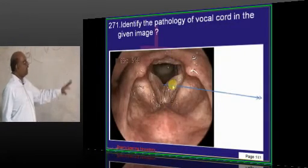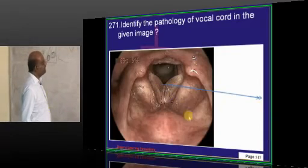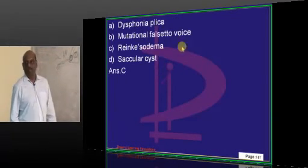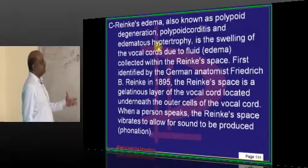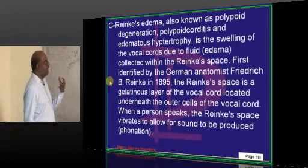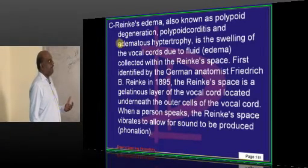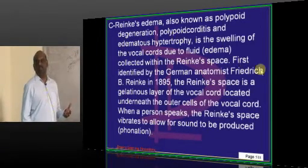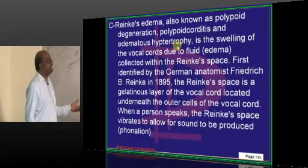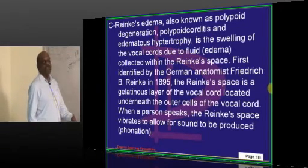In the vocal cord, what you are seeing? You are typically seeing in the vocal cord, Reinke's edema. And Reinke's edema is also polypoid degeneration. And polypoid corditis, edematous hypertrophy is the name which is being given for the Reinke's edema.